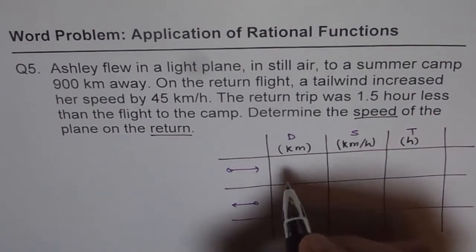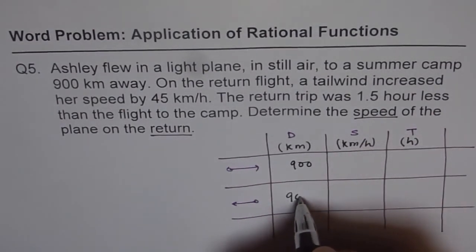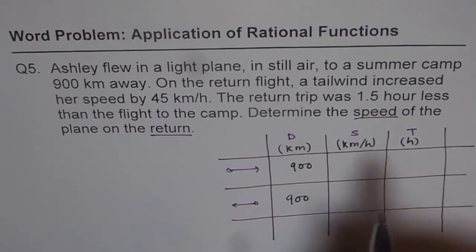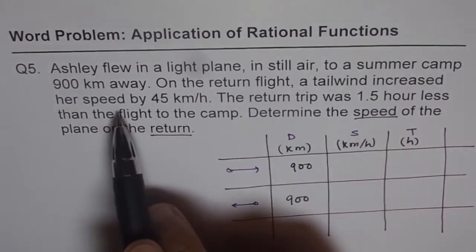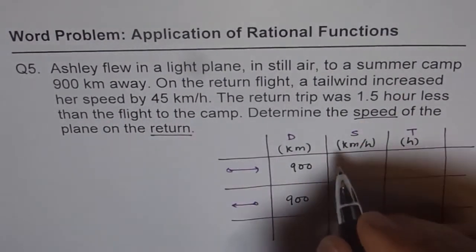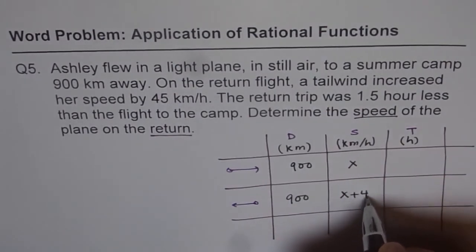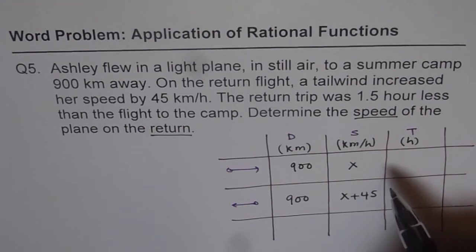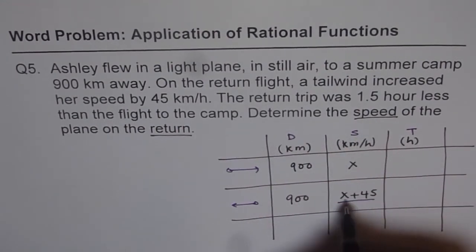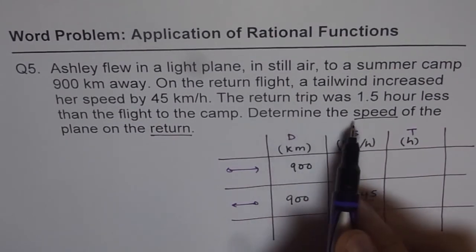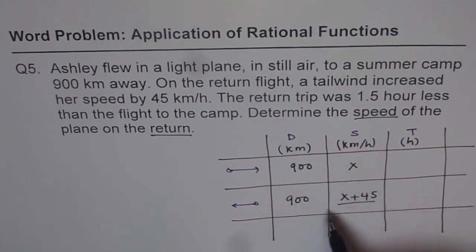It says 900 kilometers away. That means you are going 900 kilometers both sides. Now as far as the speed is concerned, on return flight, a tailwind increased her speed by 45 kilometers per hour. So if the speed is x here, it will be x plus 45. So you need to define this variable. Let the speed be x.